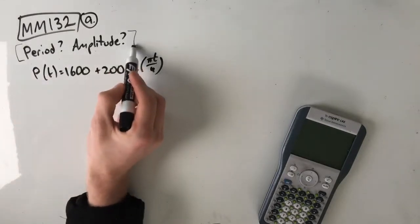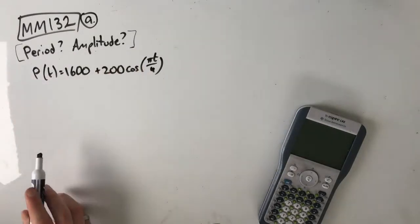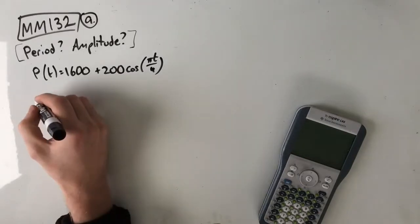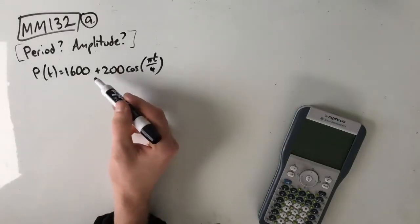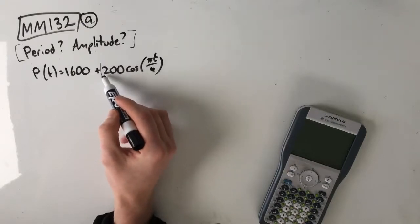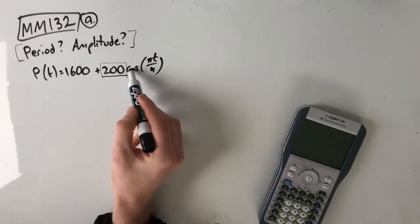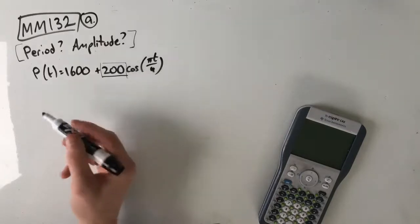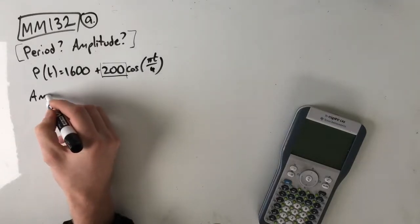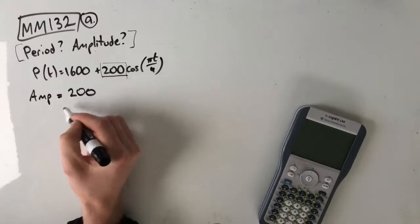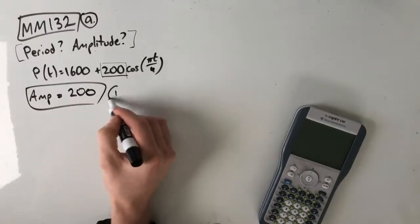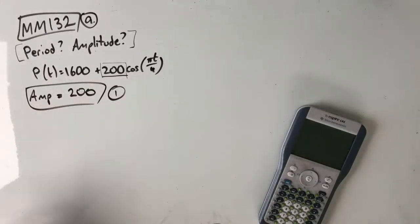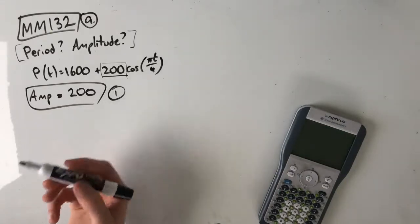We're looking for our period and amplitude. Let's start with our amplitude because I think that's the easier one. Our amplitude is always just the number outside the front of our cos or sine function. So amplitude is equal to 200. That's our first mark.